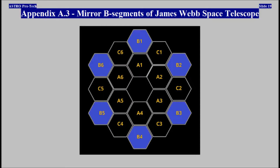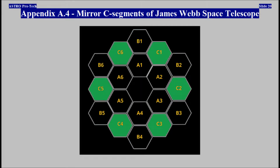Appendix A3: mirror B segments of James Webb Space Telescope shown. Appendix A4: mirror B segments and mirror C segments of James Webb Space Telescope shown.